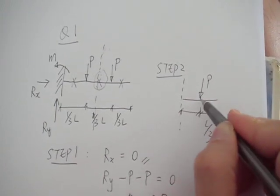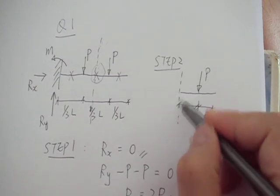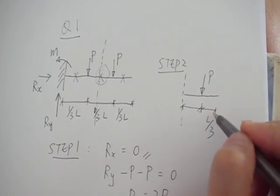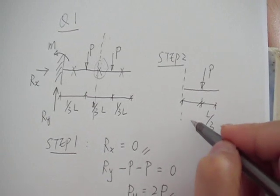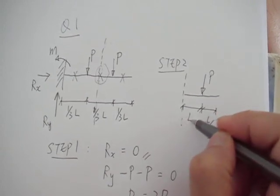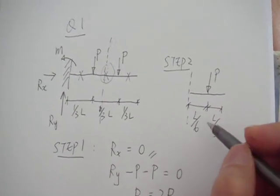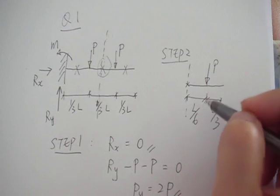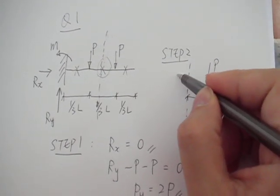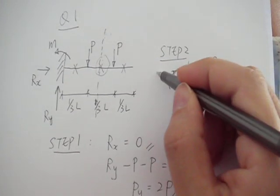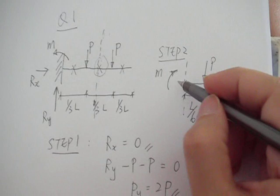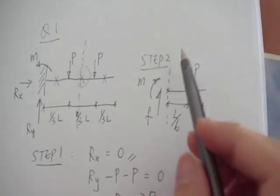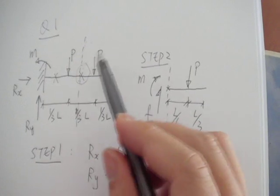That's your concentrated load P, and that's your cutting point. The length from the right end to the concentrated load is L over three, and the length from the concentrated load up to the cutting point is L over two minus L over three, which equals L over six. At this cutting point, we assume a positive bending moment according to our sign convention, and we also assume a positive shear force F. That's your complete free body diagram for the right part of the beam.